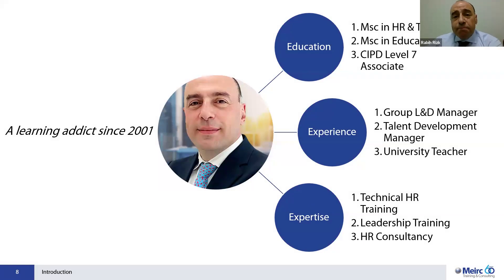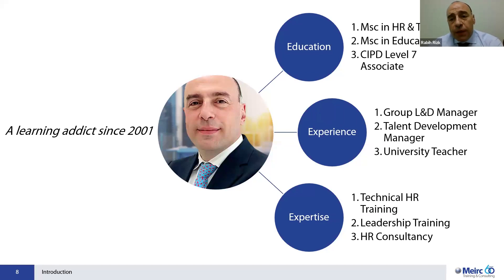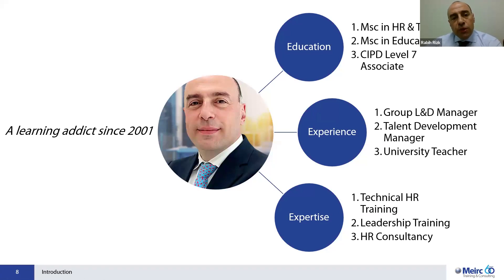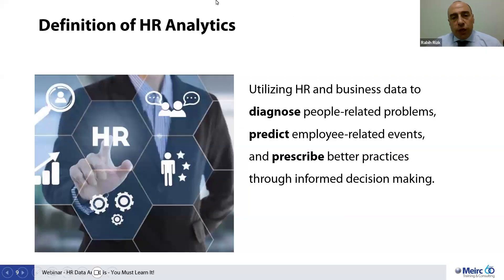My name is Rabia. I hold a master's degree in human resources management and training from the University of Leicester. I'm a CIPD Level 7 associate who has worked in learning and development since 2001. Most importantly for me, I'm a learning agent since 2001 — this is how I would like to position myself and inspire people to keep on developing themselves.